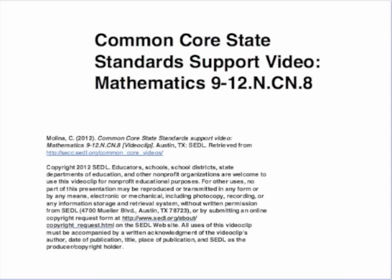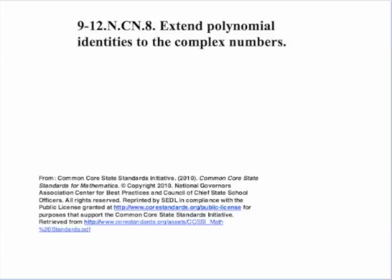This is a Common Core State Standards support video in mathematics for high school standard 9 through 12, NCN8. This standard states: extend polynomial identities to the complex numbers. Pretty short and simple — the focus is applying the polynomial identities, so let's look at those.